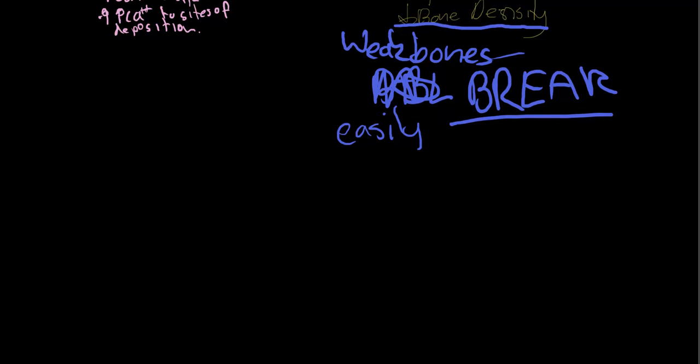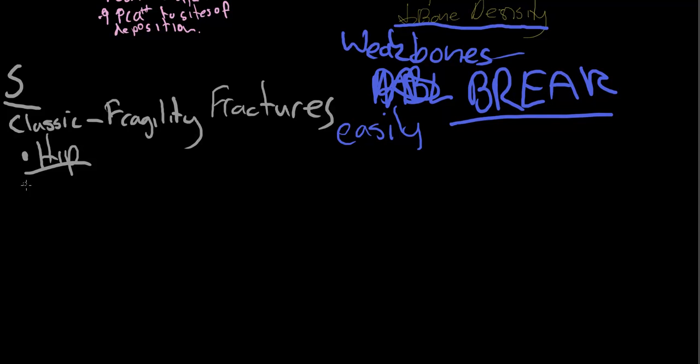On to signs and symptoms. Fragility fractures. What's a fragility fracture? That is when you break something when if you're healthy you wouldn't. People fall out of bed and break their hip, and that might be from the actual impact or it might just be because their ligaments and muscles are so strong compared to the bones.